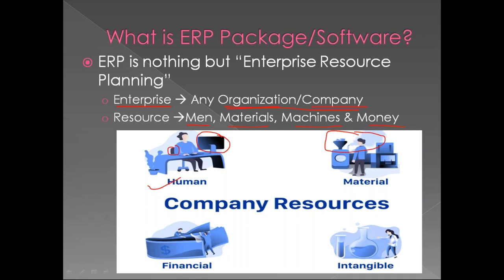When we say material it can be desktops, chairs, or plant-related materials. Machines and finance - money. And also intangible things, which we cannot touch and feel - for example, a software code or a company logo whose value cannot be weighed or liquidated. These four resources are involved in any company or enterprise.